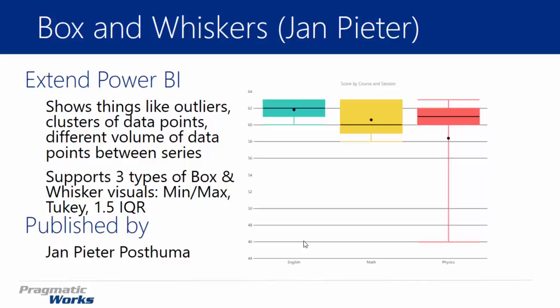Let's talk a little bit about the meaning of the whiskers and the boxes. The whiskers really show us the spread of all of the data. The ends of the whiskers — the top end and the bottom end — show the upper and lower extremes of values.